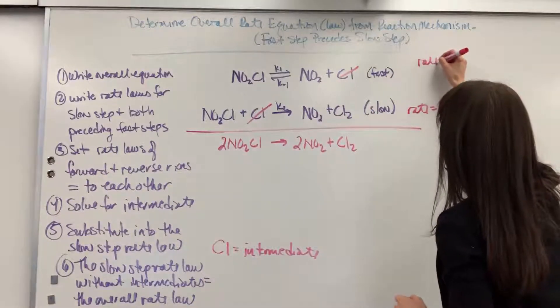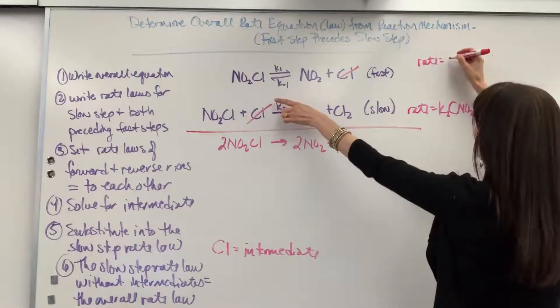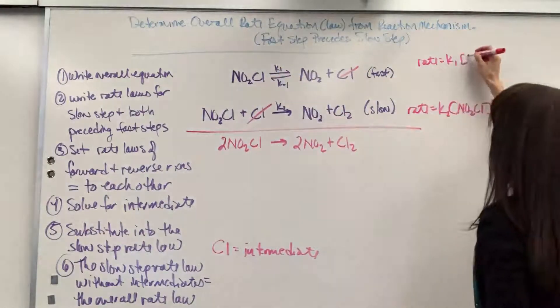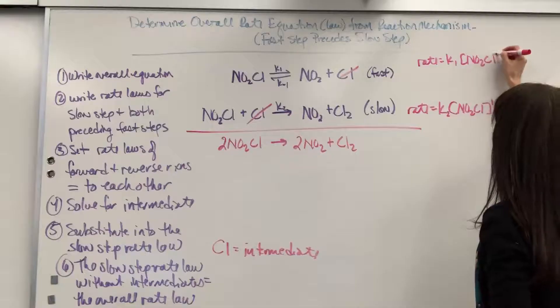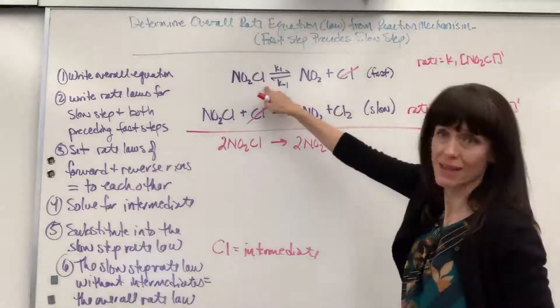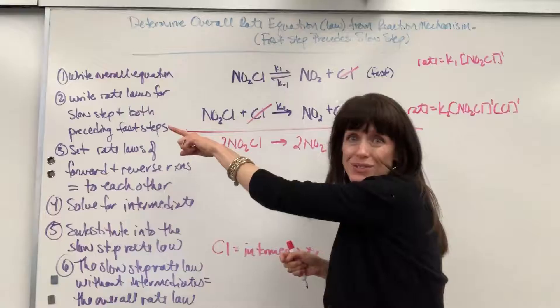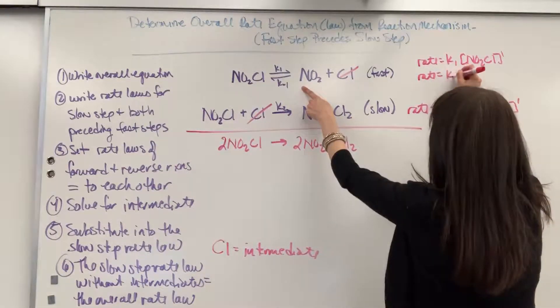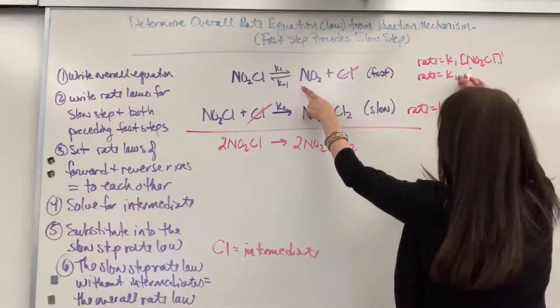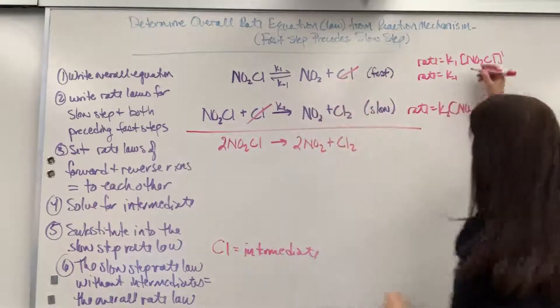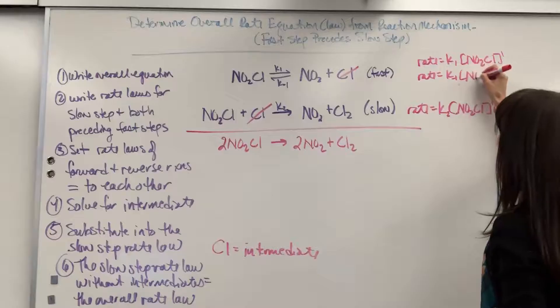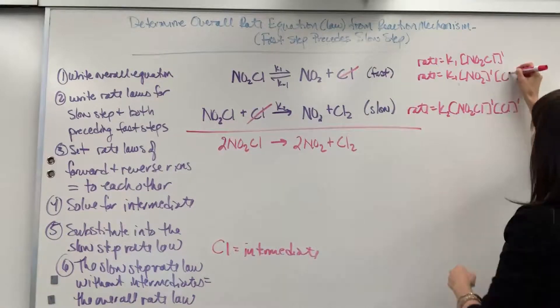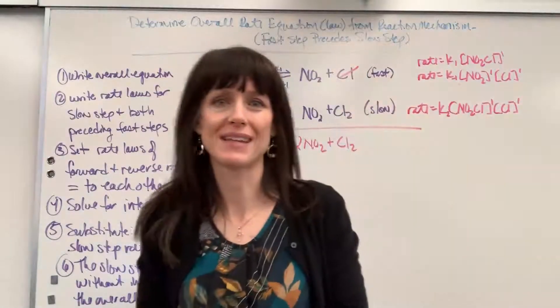Let's write down both of these rates. I'm going to have rate, let's do the forward. It's going to be K1, so I did a K1 up top, concentration of NO2Cl to the first order. Then let's write the rate for the reverse reaction. The reverse reaction will be rate equals K minus 1, going in reverse, times concentration of NO2 to the first order, times Cl to the first order. I wrote both of those down.